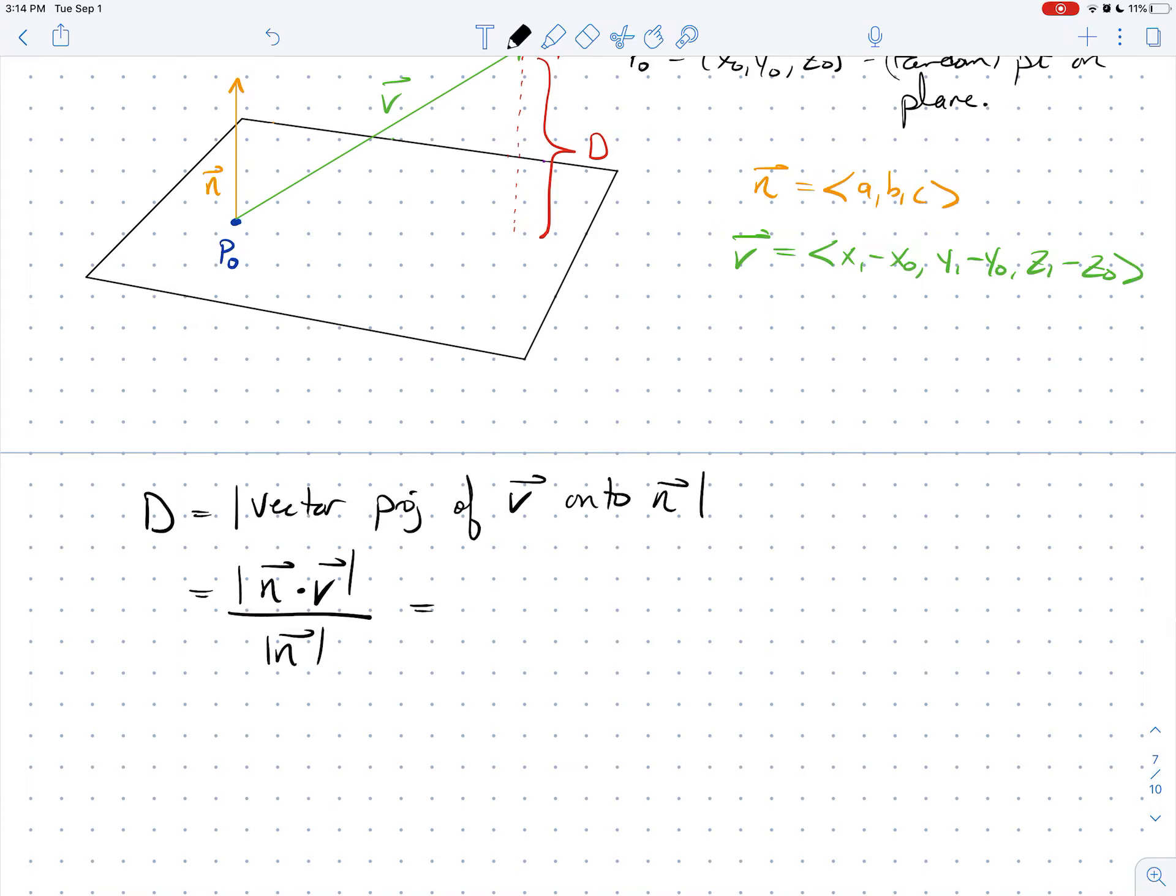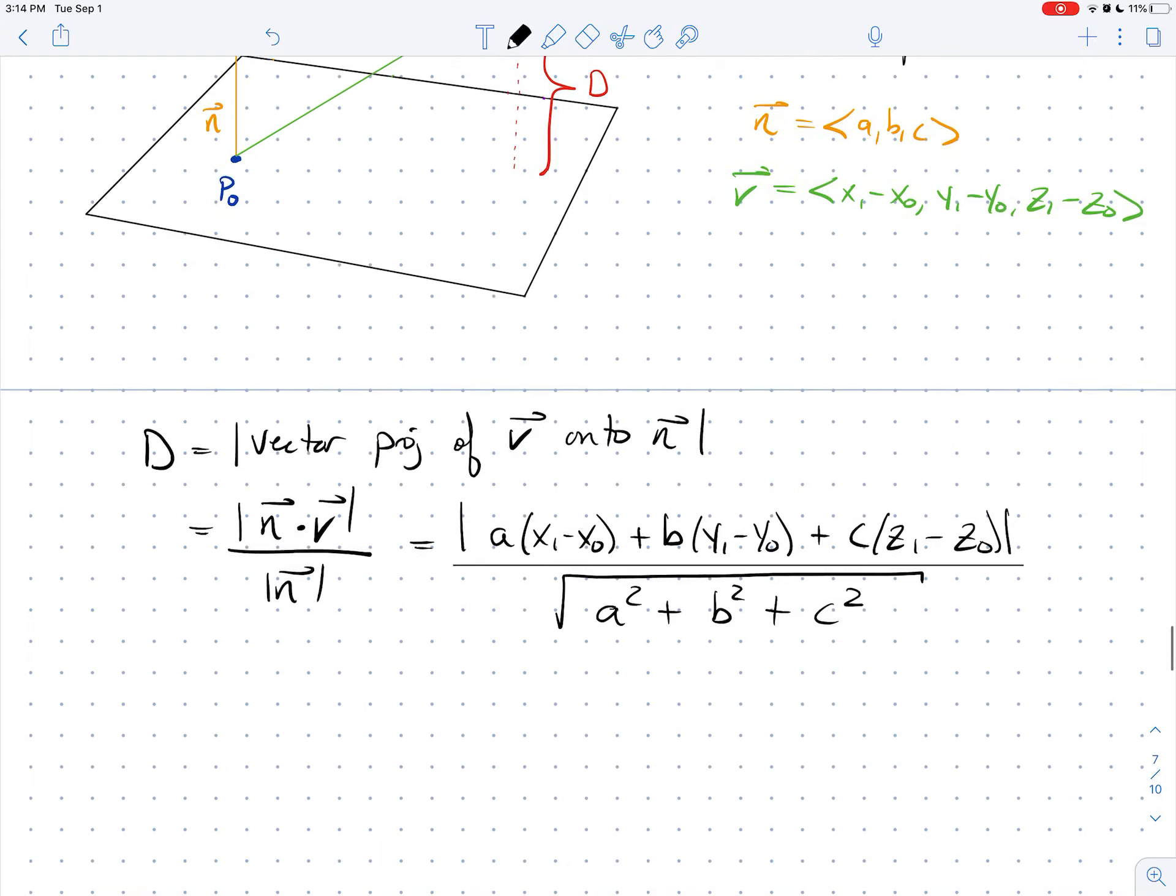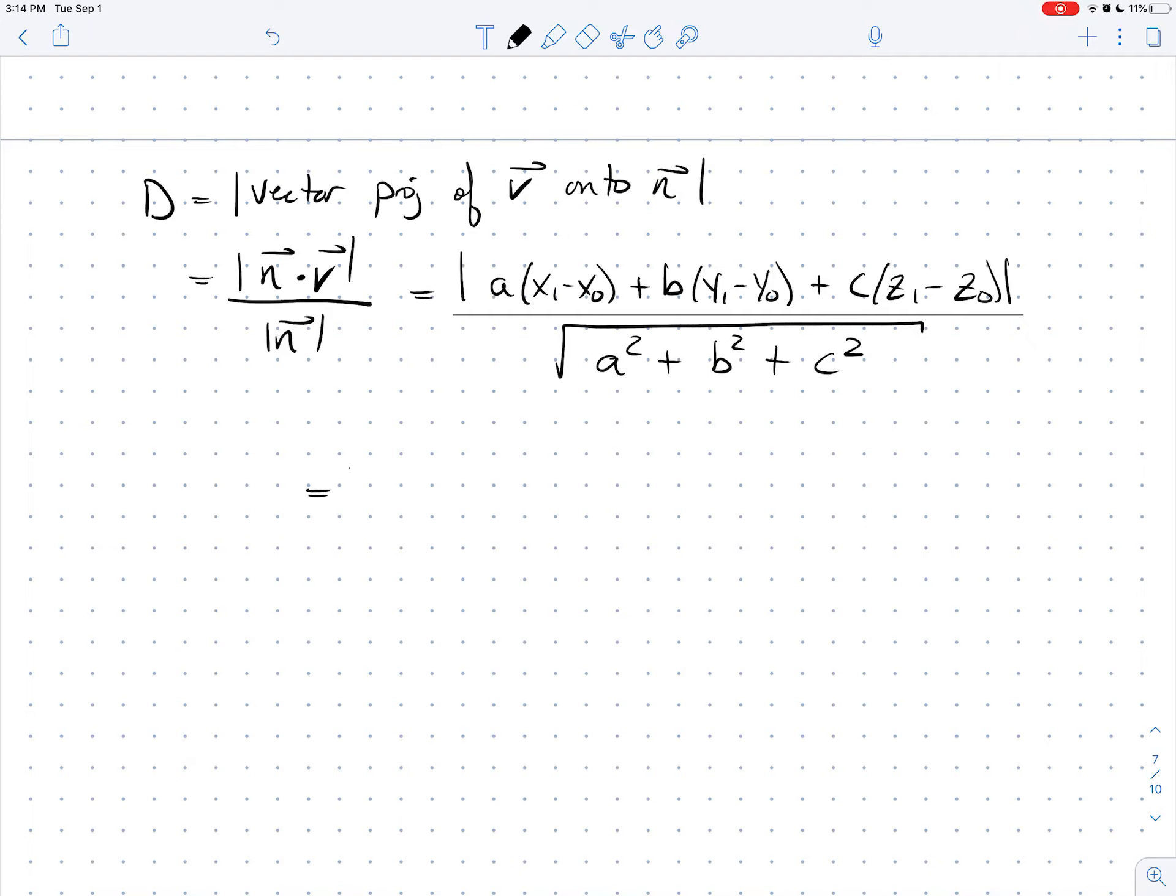So when we begin plugging everything in, I get the absolute value of A times X1 minus X naught, I'm just taking that dot product upstairs, B times Y1 minus Y naught plus C times Z1 minus Z naught. And then I'm going to divide everything by the square root of A squared plus B squared plus C squared. So that's my first step.